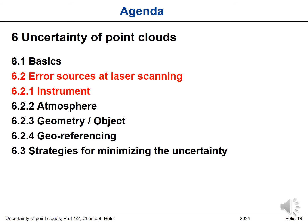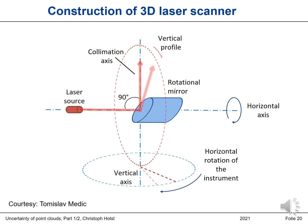We are now in section 6.2: error sources at laser scanning. We will start with the instrument, then go to atmosphere, geometry, object, and finally georeferencing. Let's start with the laser scanner. I will now only talk about 3D laser scanners. In the end you will see that 2D laser scanners — such as those used for mobile mapping systems — are simply less complex with fewer error sources. This is why I will talk about static 3D laser scanners, and then you can just neglect some error sources to arrive at 2D profile laser scanners.